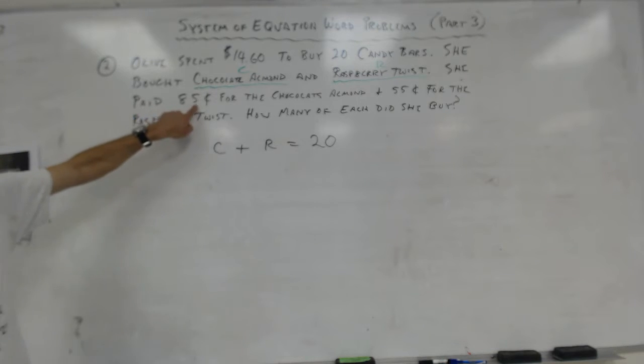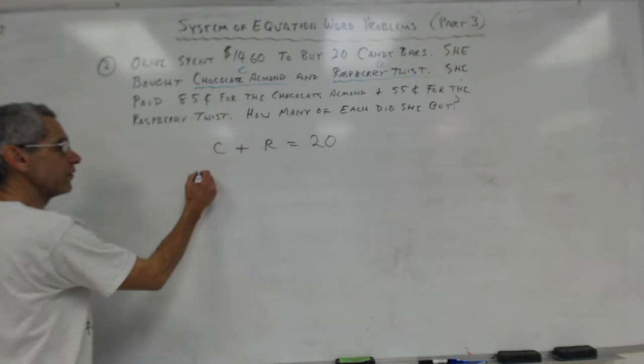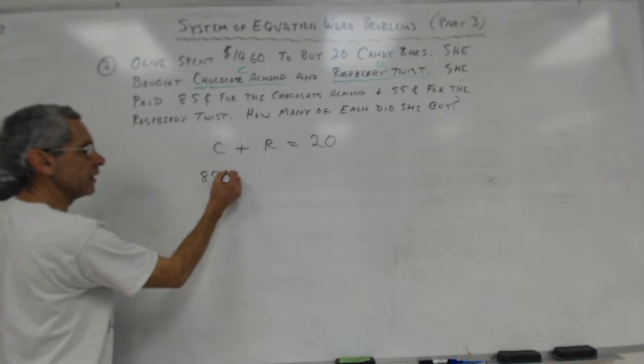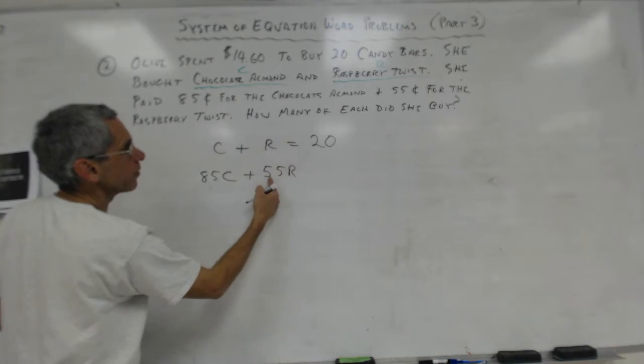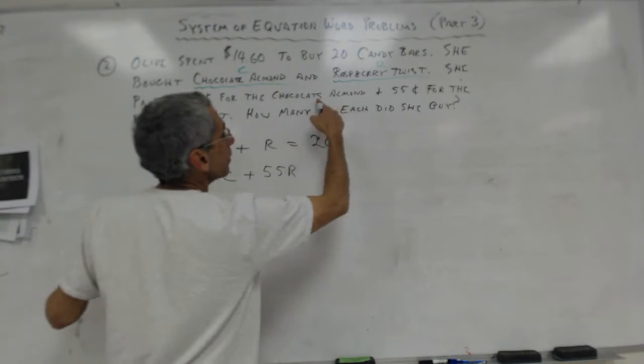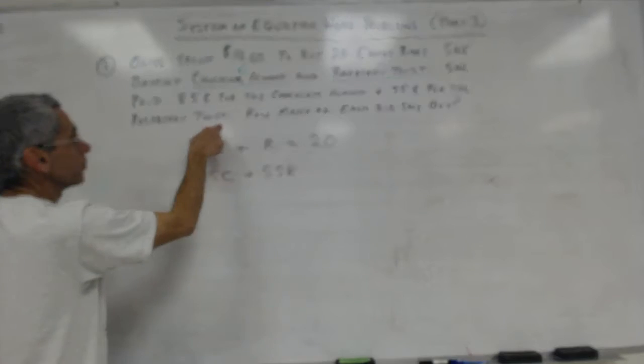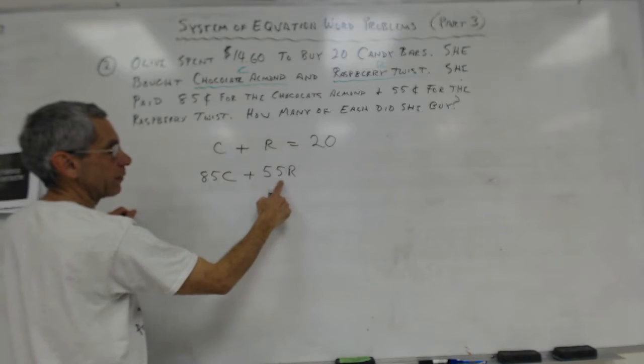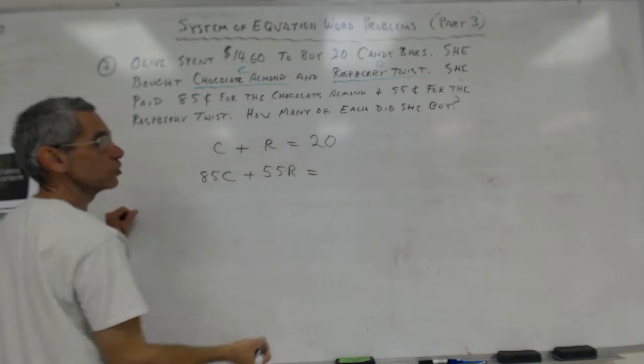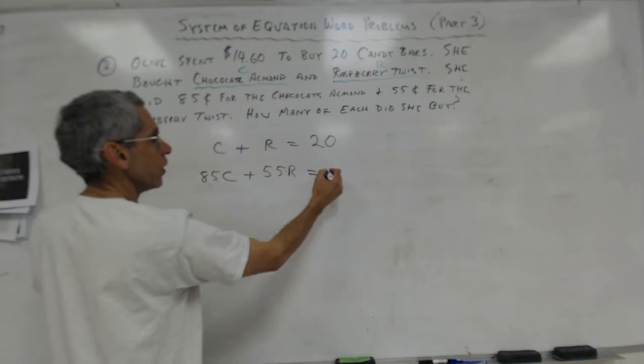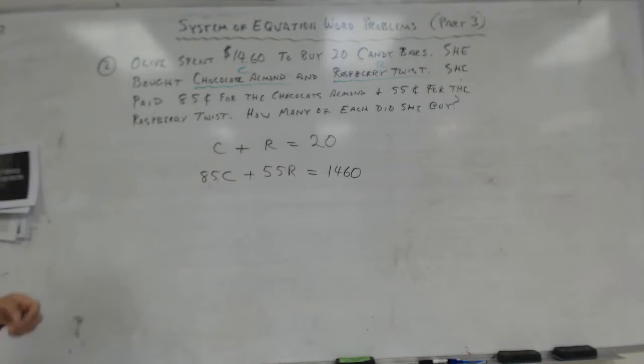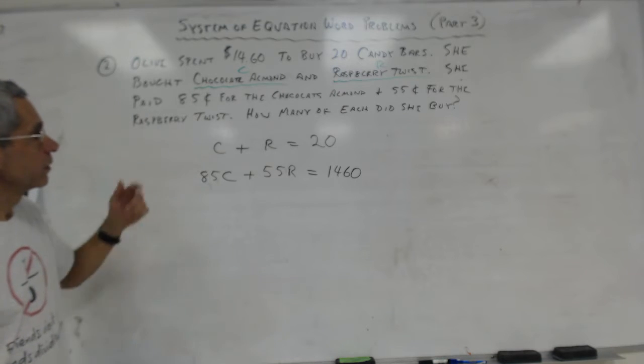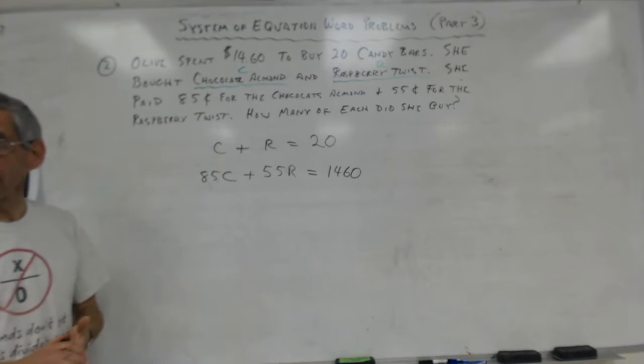So 85C, I put my 55 cents for the raspberry twist, so I put my value of the raspberry twist is equal to the total amount of money she spent, which is $1460. C plus R equals 20. So what would I do? I would do systems of equations by elimination. I tend to like to multiply by the smaller numbers.